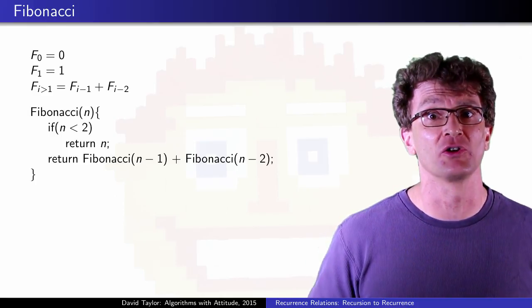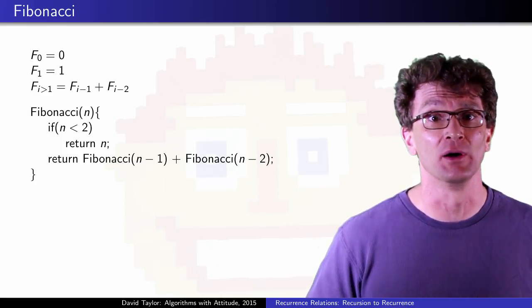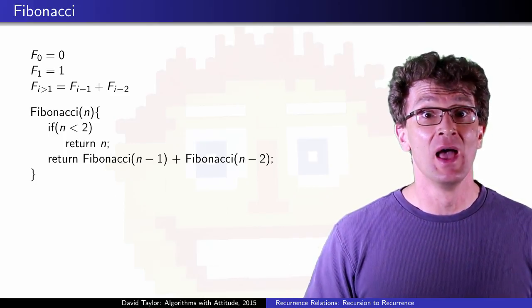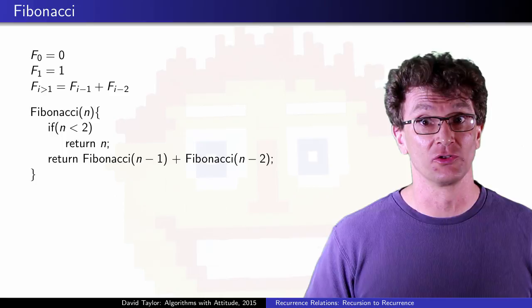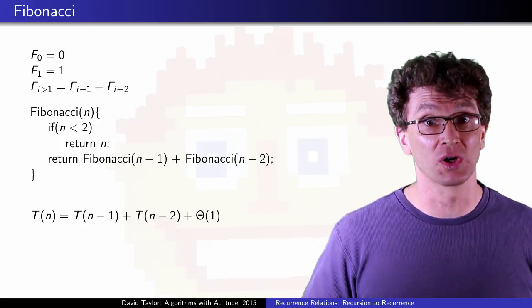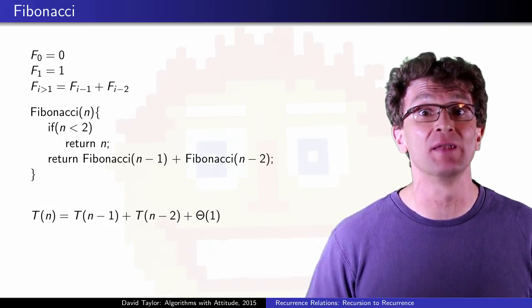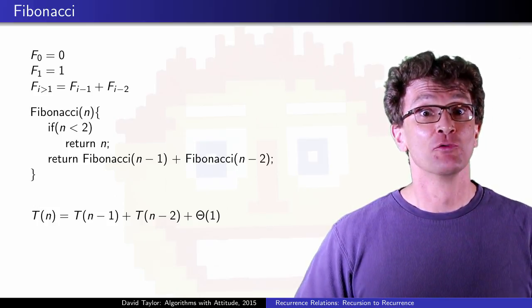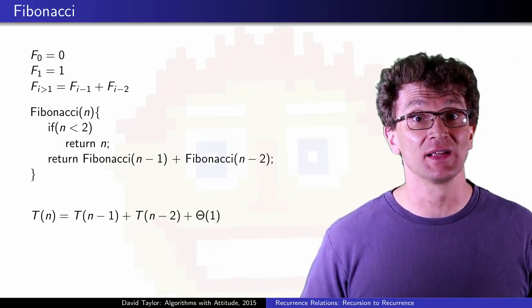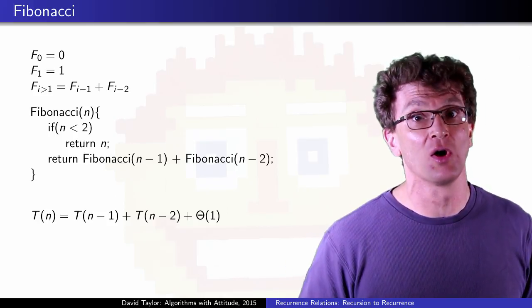And here is a terrible recursive program to calculate the nth number. Assuming that the number stays small enough to add in constant time, and ignoring the run time of the recursive calls, it takes constant time to calculate. But you have those recursive calls, and they are made with arguments n-1 and n-2. If we use T as a function for this program's run time, we can write T(n) like this in terms of T with smaller arguments.